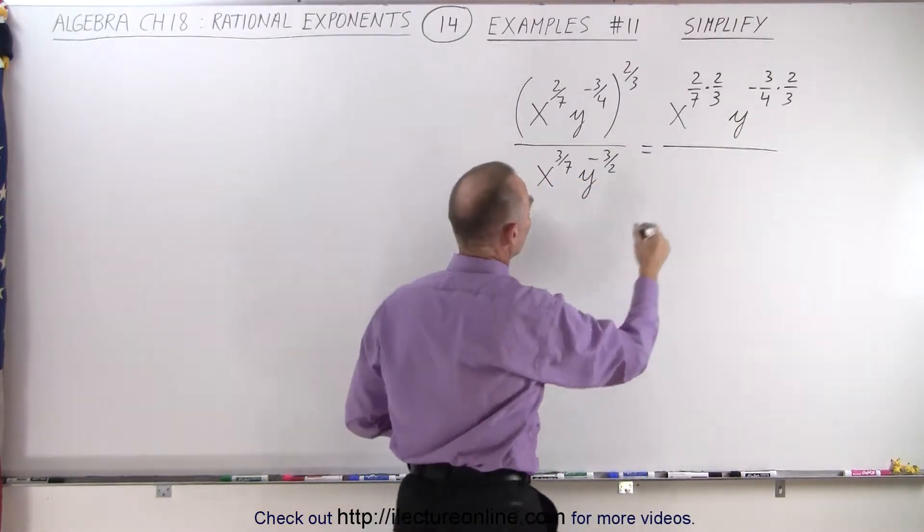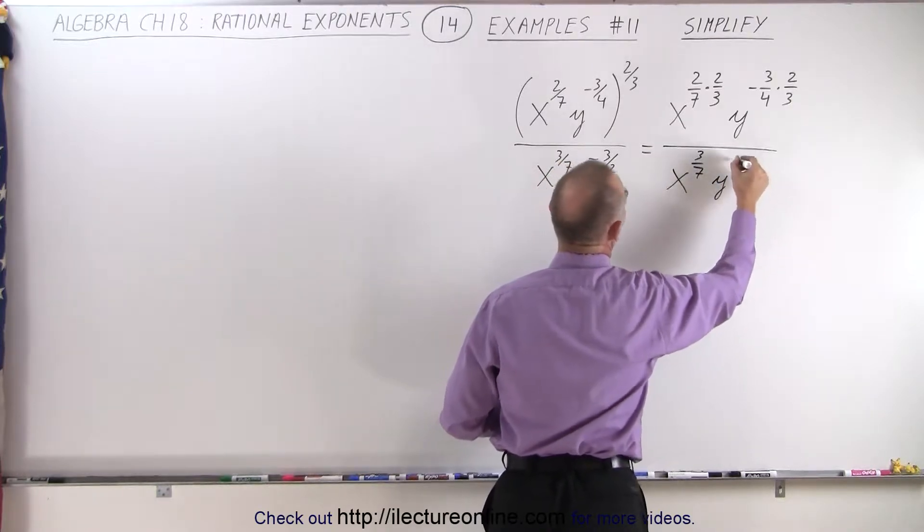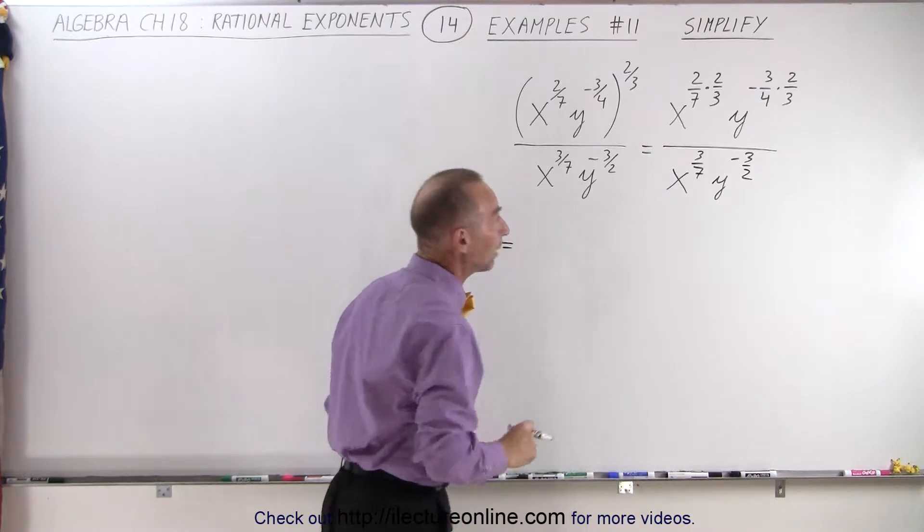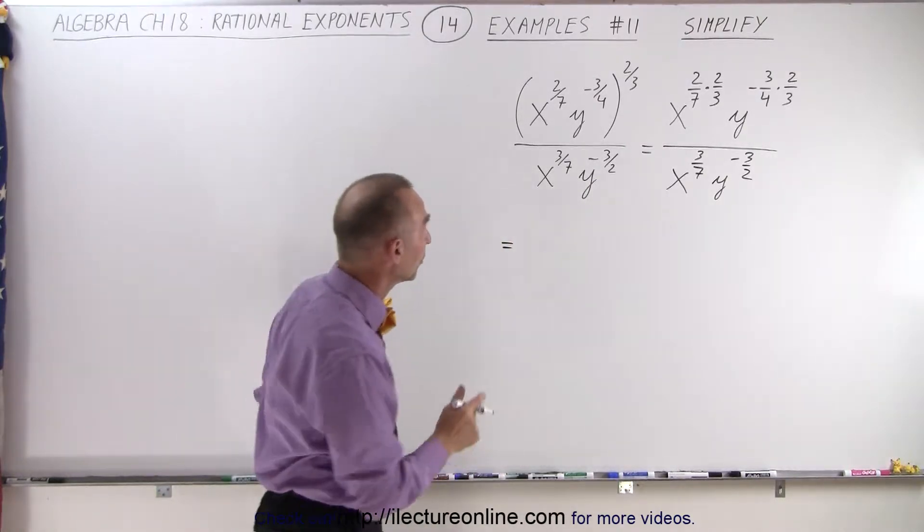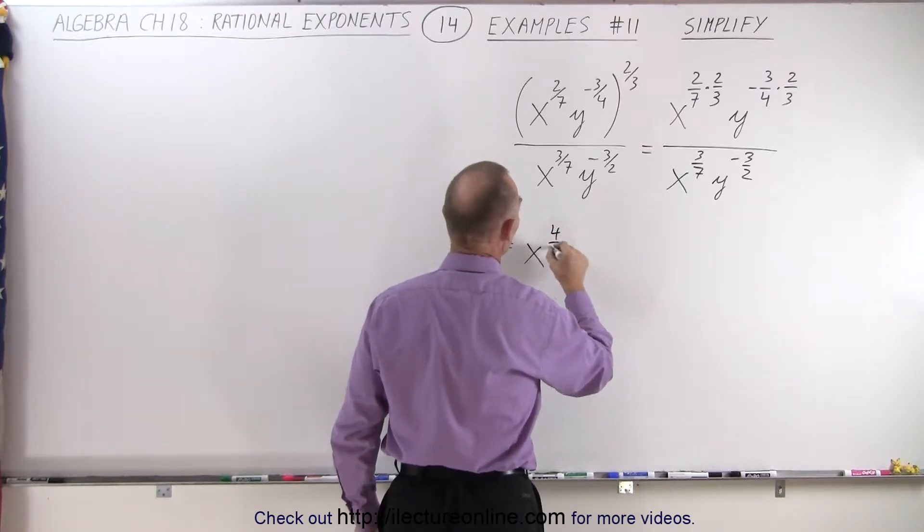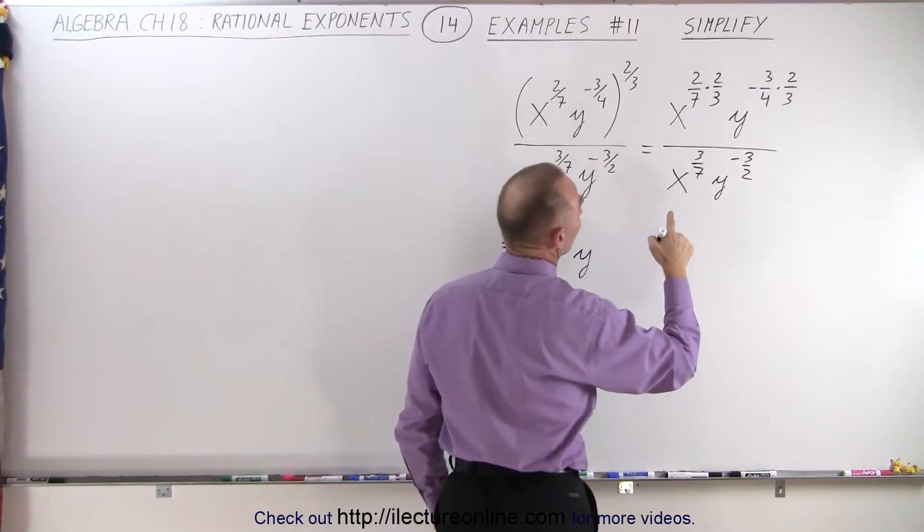And then the denominator, we'll leave that the same for now. So we have x to the 3/7ths times y to the minus 3 over 2 power. So let's simplify what we have in the numerator by multiplying those exponents. So we get x to the 2 times 2, which is 4, 3 times 7, which is 21.